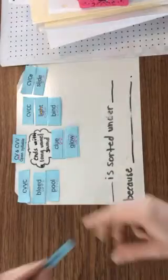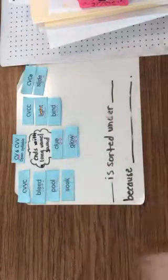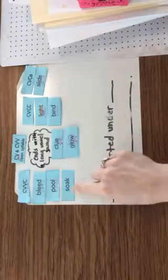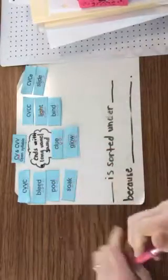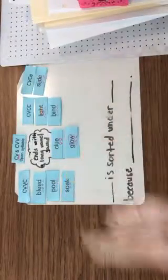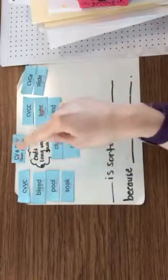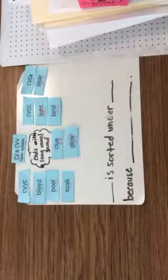We also have the word soak is making the long O sound, and it's the O and the A, two vowels, that make the sound when they're put together. We also have CV and CVV as the open syllable.